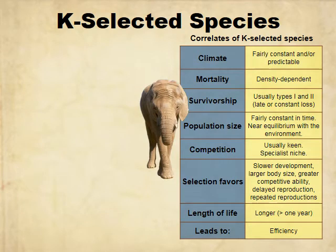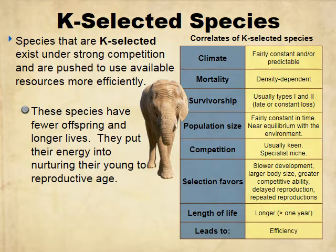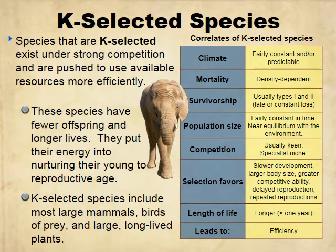I like to think of R selected species as rodents and cockroaches. K selected species are completely different — they use resources more efficiently, have fewer offspring, longer lives, and put their energy into nurturing their young. Examples include large mammals, birds of prey, large long-lived plants, elephants, and humans. They need specific parameters — they're specialists requiring a certain habitat and environment. They're usually density-dependent, type one or two on the survivorship curve, have stable population sizes, specialized niches, slower development, larger body size, delayed reproduction, very few offspring at a time, longer lives, and longer gestation times.